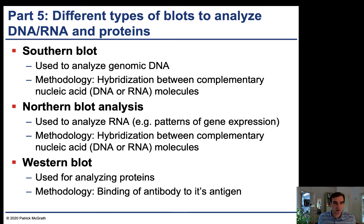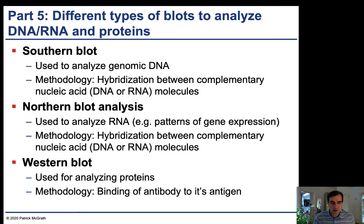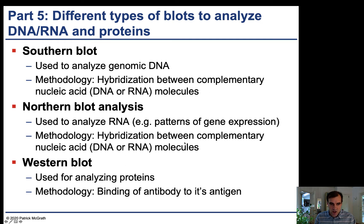We covered PCR, and now we're going to talk about blots. These allow you to further analyze DNA, RNA, and proteins. There are three types: the Southern blot, the Northern blot, and the Western blot. The Southern blot analyzes genomic DNA, the Northern blot analyzes RNA, and the Western blot analyzes proteins. The first two use hybridization between complementary nucleic acids. The Western blot uses antibodies instead, because there's no complementary sequence approach for proteins.